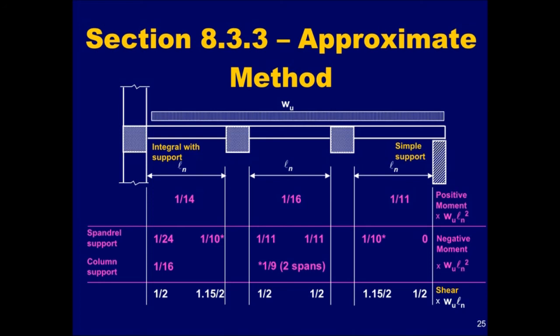Coefficients for the shear forces at the face of the supports are also shown. These coefficients are multiplied by W sub U, L sub N. The approximate bending moments and shear forces obtained from these coefficients give reasonably conservative values for the stated conditions. Section 8.4.1 states that redistribution of negative moments in continuous flexural members is not permitted when this approximate method is used. Provisions for moment redistribution when the approximate method is not used will be discussed later.